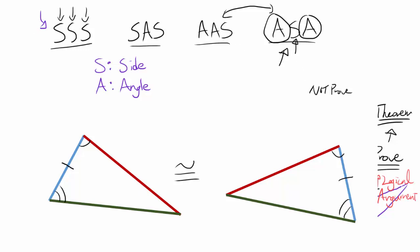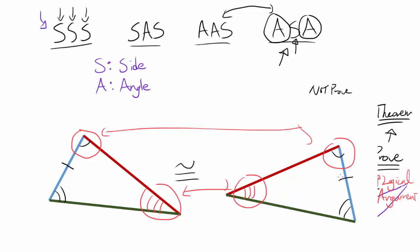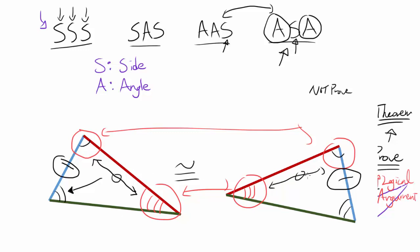AAS is telling you: if two angles are congruent — let's say this one and this one — and one side that is not in between those two angles — notice how S is not in between the two A's — are congruent, then the entire triangles are congruent. This makes sense because if these two angles are congruent, the third angle, which has to be 180 minus the sum of the other two, also has to be congruent. Because all three angles must add up to 180, if two of them are the same, the third one has to be the same as well.